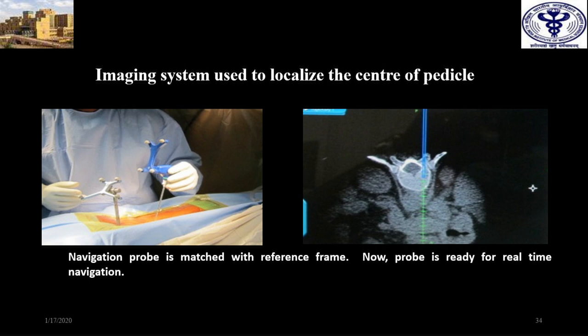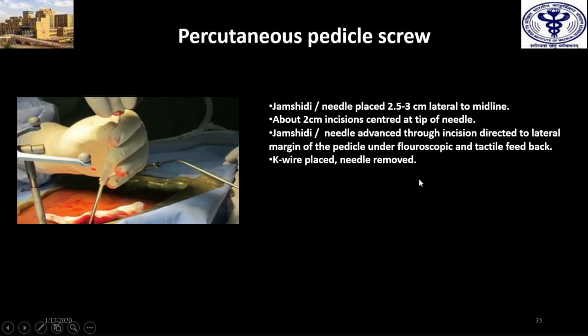After doing the true AP, you tilt the machine 20 to 30 degrees laterally, then put your screw directly in line with the x-ray machine. These are various techniques you should know - you will obviously do what you do every day, but you should know what other options are available and how people have tried to reduce fluoroscopy and x-ray time. With this in-line technique, they directly insert the screw without multiple shots, then change the machine direction to the opposite side for the other level.